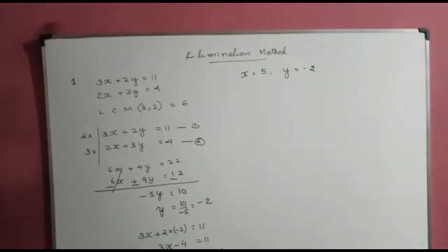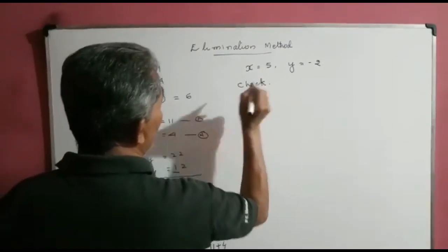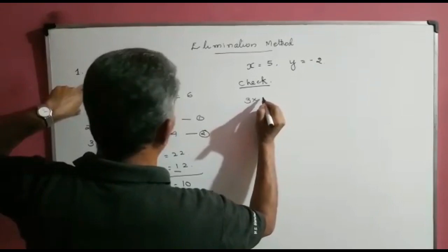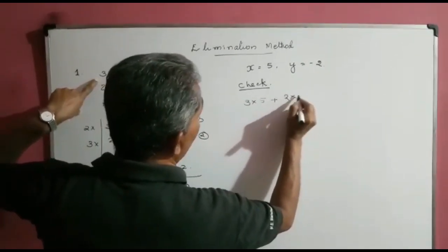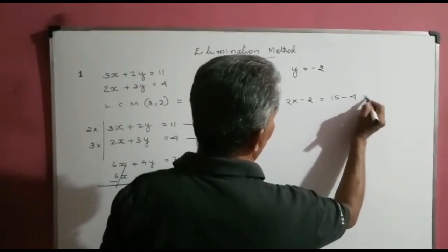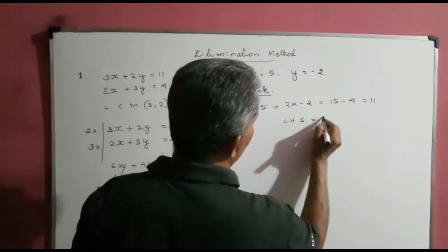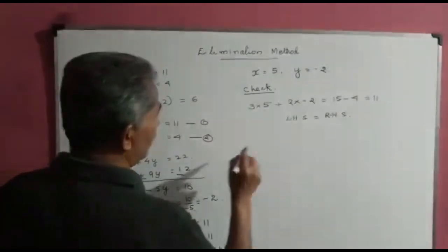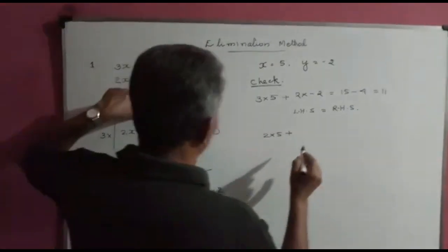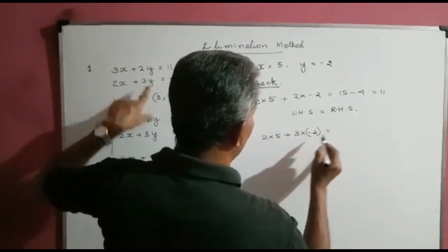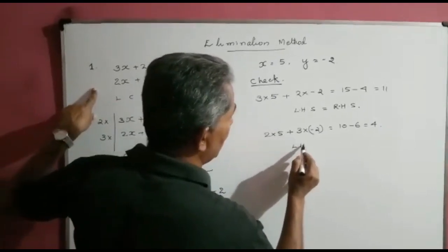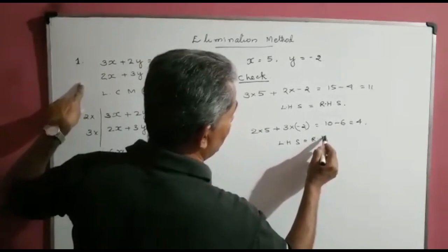Let us check whether these values are correct. For the first equation, 3 times 5 plus 2 times minus 2 equals 15 minus 4, which equals 11 — LHS equals RHS. For the second equation, 2 times 5 plus 3 times minus 2 equals 10 minus 6 equals 4 — LHS equals RHS. Therefore both values x equals 5 and y equals minus 2 are correct.